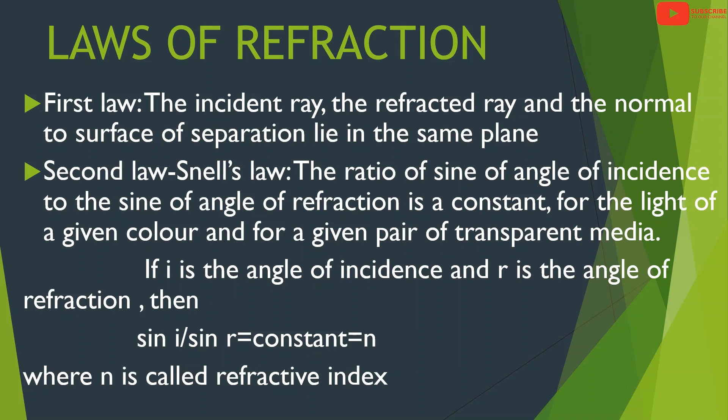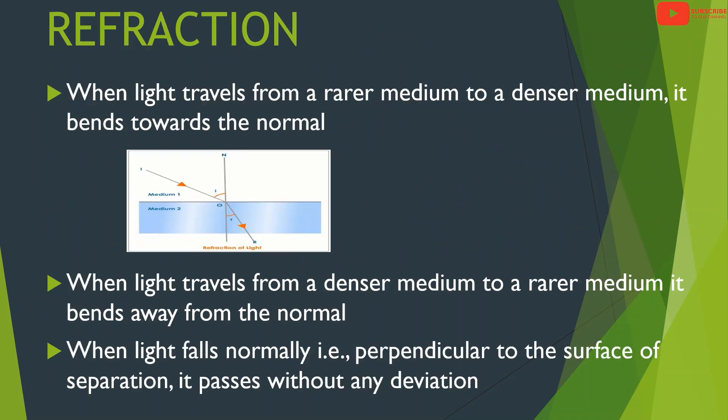When light travels from a rarer medium to a denser medium, it bends towards the normal. When light travels from a denser medium to a rarer medium, it bends away from the normal. When light falls normally, that is perpendicular to the surface of separation, it passes without any deviation.